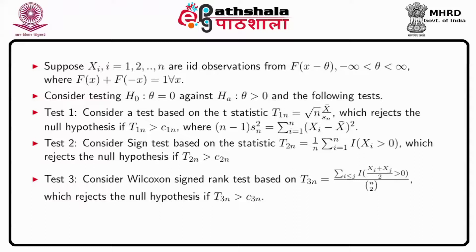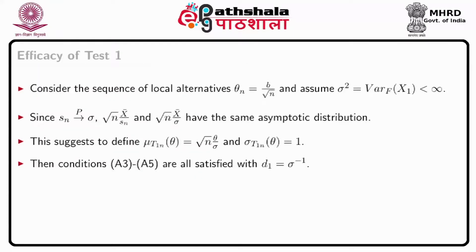Test 3 is the Wilcoxon signed rank test based on statistic T_{3n} equal to the sum over i less than j of I((x_i plus x_j)/2 greater than 0) divided by n choose 2, which rejects the null hypothesis if T_{3n} is greater than c_{3n}. Consider the sequence of local alternatives theta_n equal to b divided by root(n) and assume the variance of the distribution is finite. We verify conditions A2 to A5: since s_n converges to sigma in probability, root(n) times x-bar divided by s_n and root(n) times x-bar divided by sigma have the same asymptotic distribution. This suggests defining mu(T_{1n}, theta) equal to root(n)*theta/sigma and sigma(T_{1n}, theta) equal to 1, and conditions A3 to A5 are all satisfied with d_1 equal to sigma to the power minus 1.